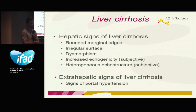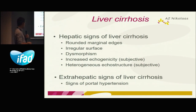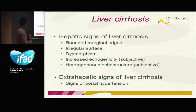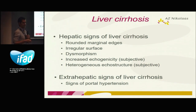What can we see in a patient with liver cirrhosis? First, you have rounded marginal edges. The liver surface will be irregular with a nodular liver surface. There will be dysmorphism of the liver — some parts enlarge and others atrophy. Sometimes you can have increased echogenicity and the echostructure will be heterogeneous. You can also have signs of portal hypertension.